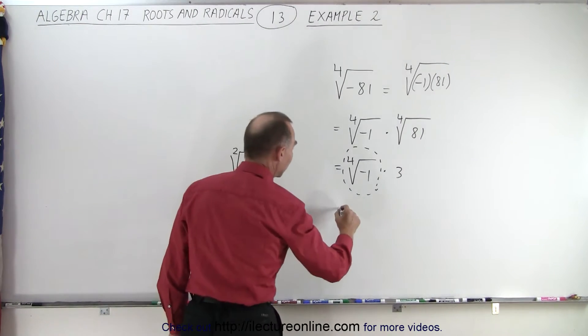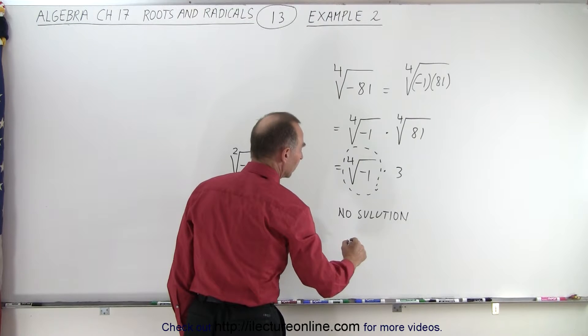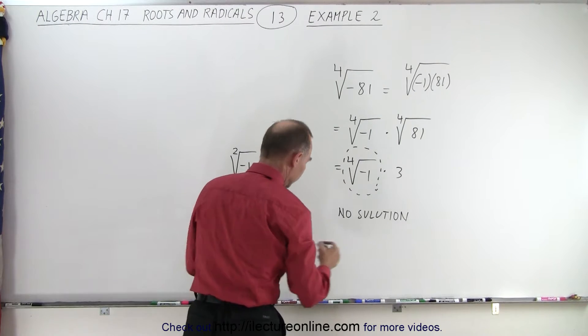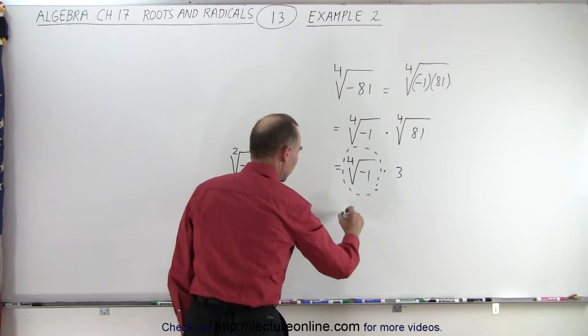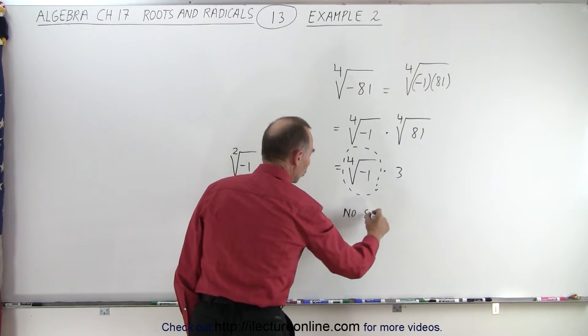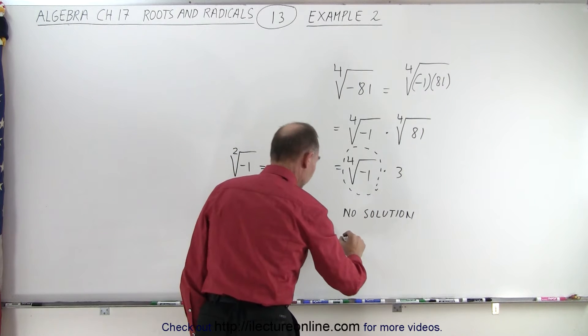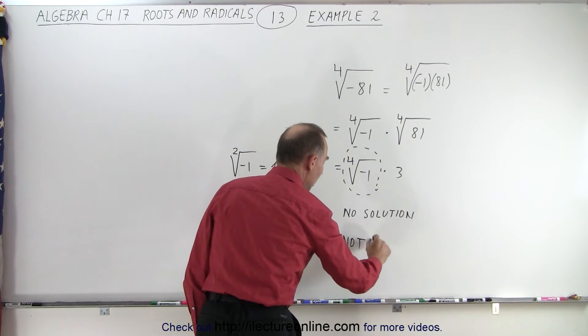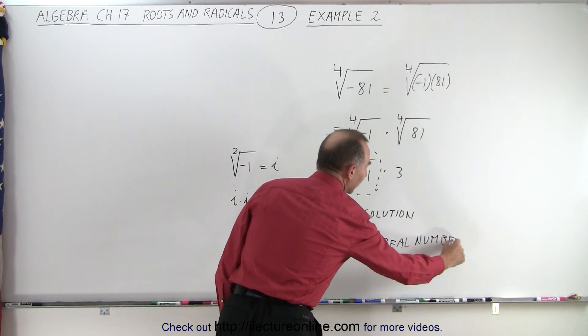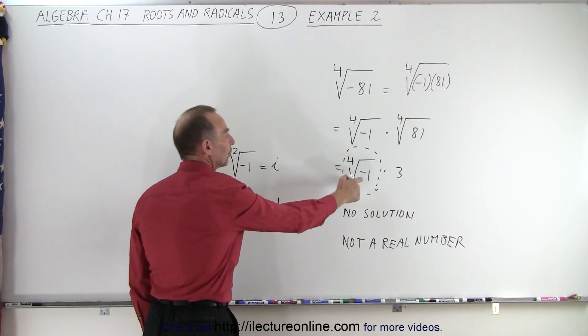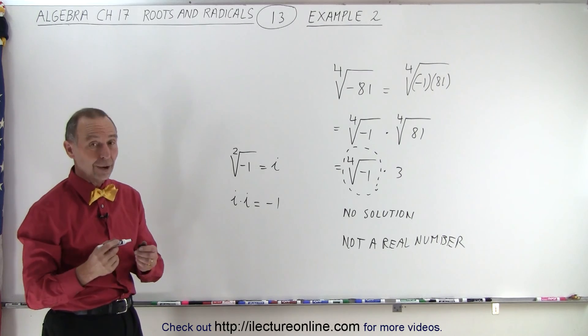So therefore, we say that this is no solution. In other words, it is not a real number. And we could probably just leave it like that, that we cannot simplify that because we don't have an equivalence of the fourth root of negative 1. And that is how it's done.